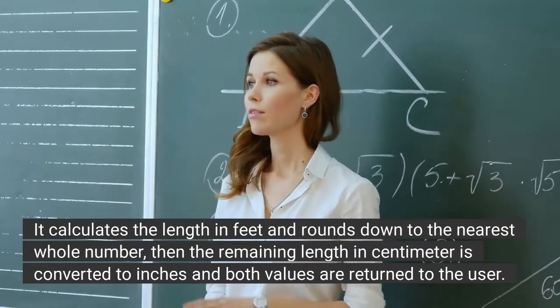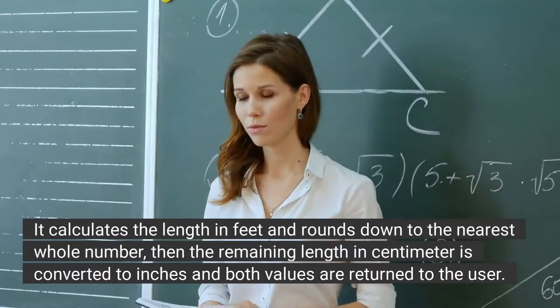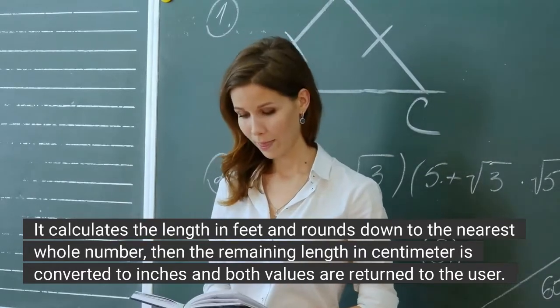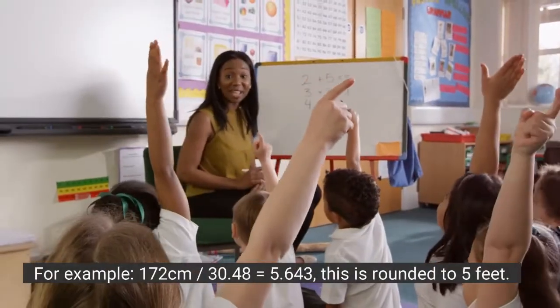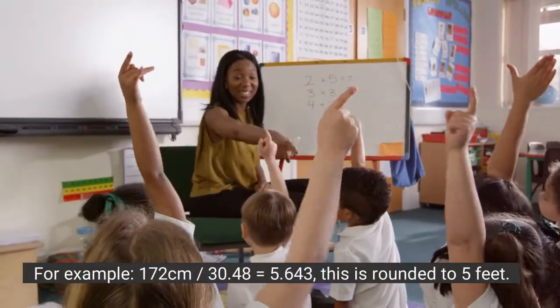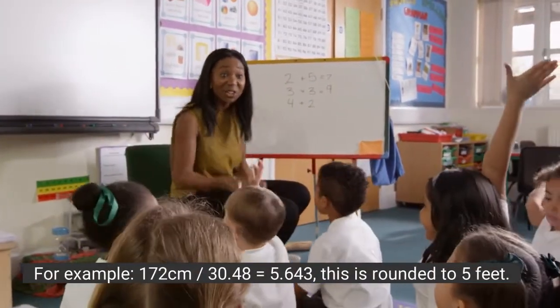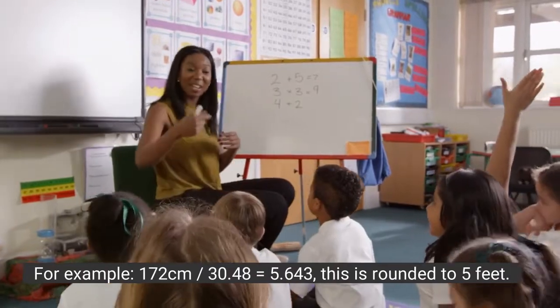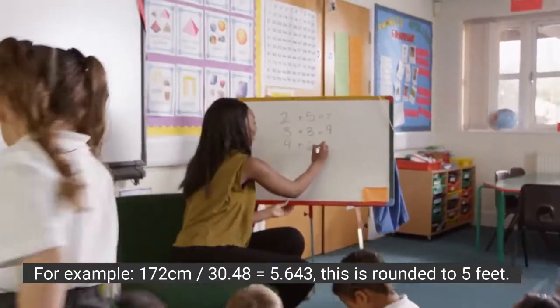Then the remaining length in cm is converted to inches and both values are returned to the user. For example, 172 centimeters divided by 30.48 equals 5.643, which is rounded down to 5 feet.